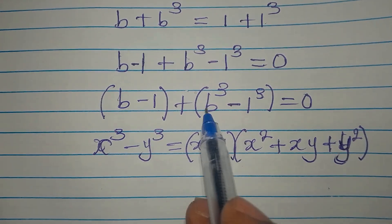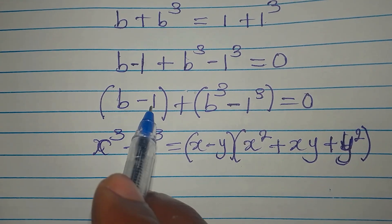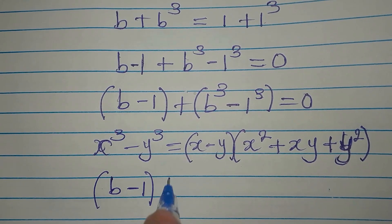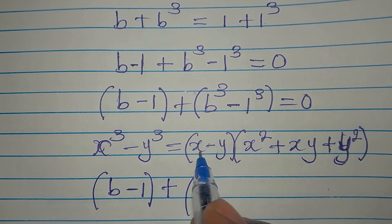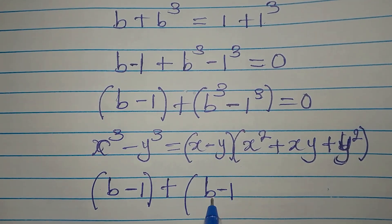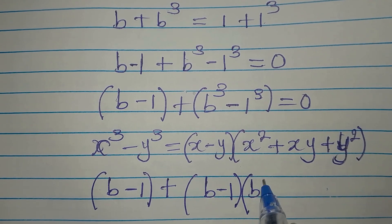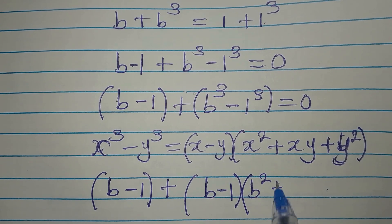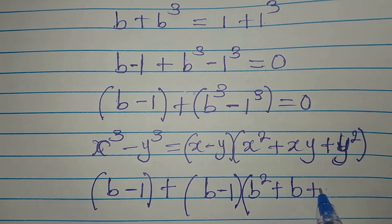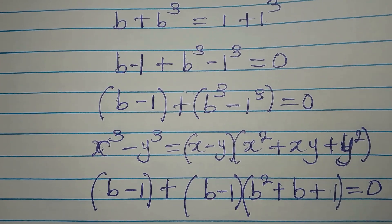Our x is b and our y is 1. So let's write this: we have b minus 1, then plus — applying the difference of two cubes — b minus 1, times x squared which is b squared, plus xy which is b times 1 giving b, plus y squared which is 1 squared giving 1. Everything here is equal to 0.